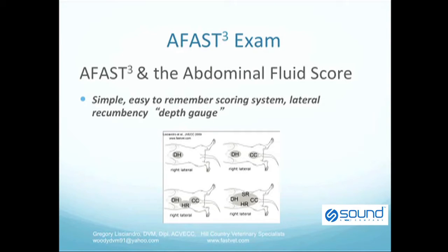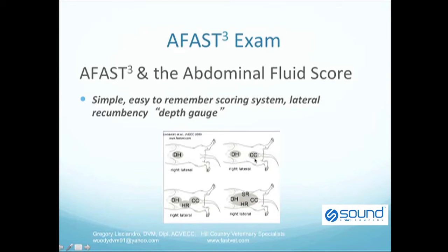As you can see in this cartoon, the dogs are in lateral recumbency. As they start to fill up with fluid — especially in traumatized dogs, where this would be blood — the more blood that accumulates in their abdomen, the higher score they will have. A score of 1, an AFS of 1, would mean that the dog is positive at any of the four sites. Shown here is a dog that's positive at the DH site. Moving to the right, you can see an AFS of 2, where the dog is positive at any two AFAST views — shown here is the DH view and the cystocolic view both being positive.